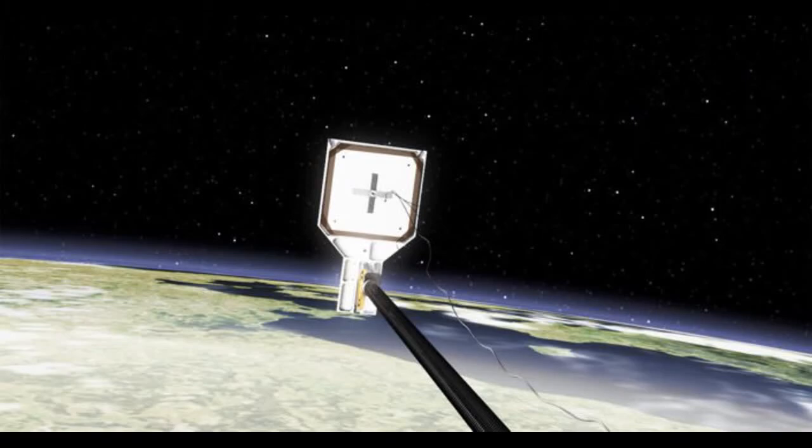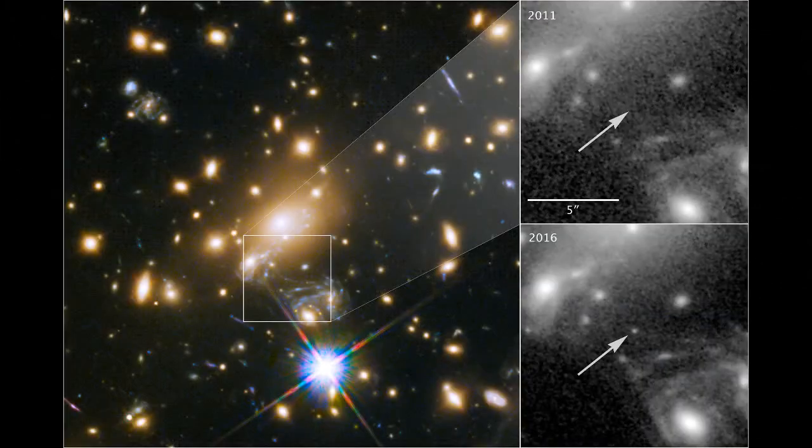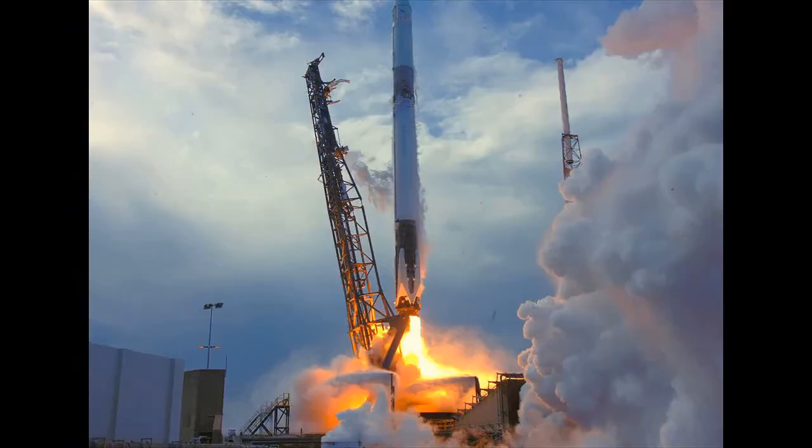The cargo capsule is expected to reach the ISS on Wednesday this week where astronauts will assemble and deploy the removed debris satellite sometime in May or June of this year via a robotic arm.